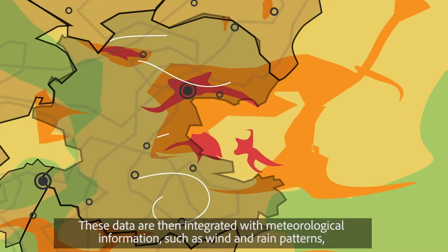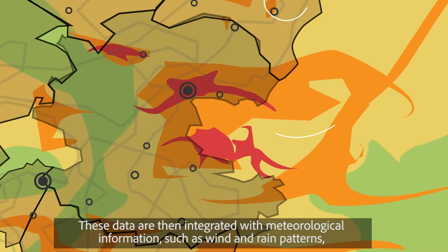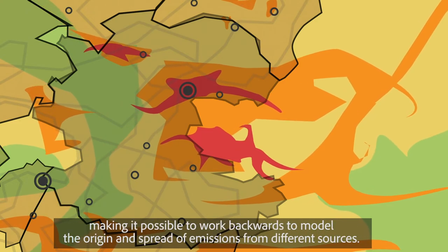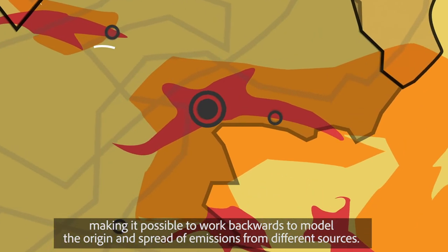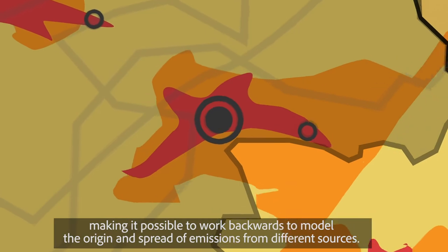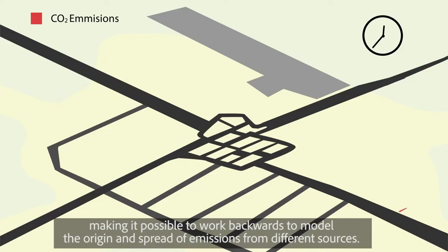These data are then integrated with meteorological information such as wind and rain patterns, making it possible to work backwards to model the origin and spread of emissions from different sources.